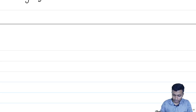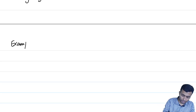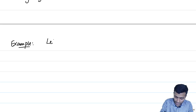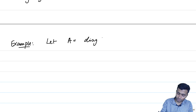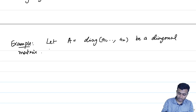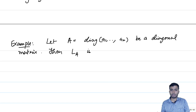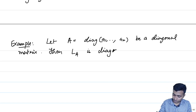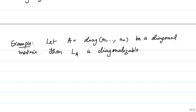Let A = diag(a₁, ..., aₙ) be a diagonal matrix. Then L_A is diagonalizable with respect to the standard basis of Rⁿ, since the matrix of L_A with respect to the standard basis is already a diagonal matrix.